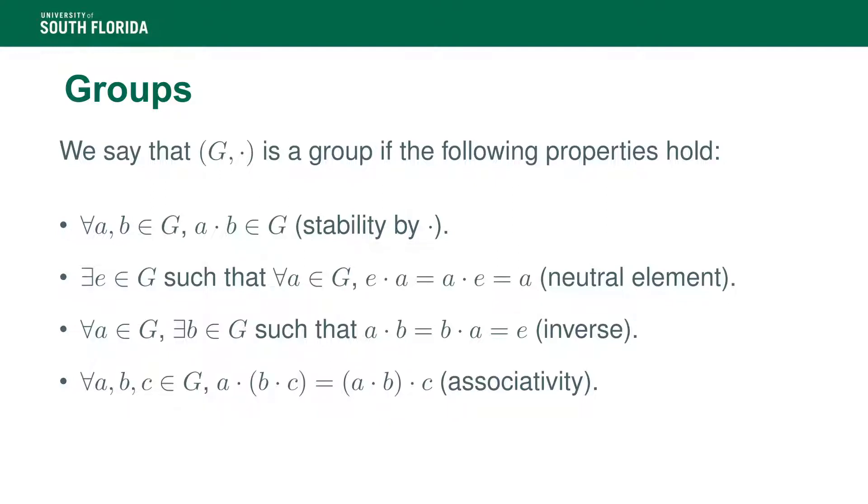Groups are just sets that are equipped with a law, which here we denoted multiplicatively, such that each pair of elements of a group G, their product or operation through the law is still in G. In addition, we require that there be a neutral element, which is an element such that when you multiply it from the left or from the right to any element in G, this leaves the element unchanged.